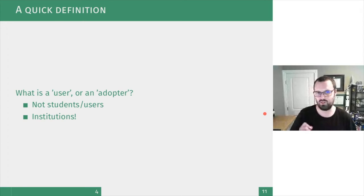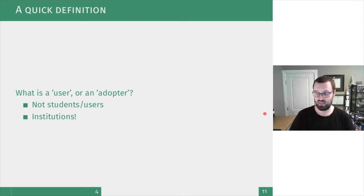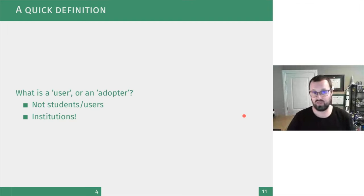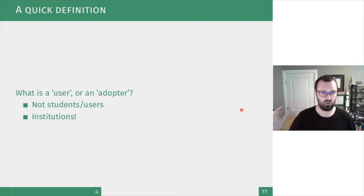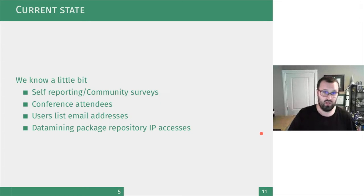Quick definition: when I say 'user' or 'adopter,' I'm not talking about your students. If you're the University of Somewhere, I don't care about your students — I don't really want to know anything about them aside from roughly how many there are. When I say 'user' or 'adopter,' I mean the institution as a group. That's the kind of thousand-foot detail we're looking for — not individual people, but the company-level entity. I think we've struck a reasonable balance without being too invasive.